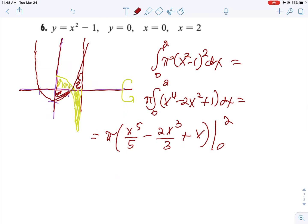And then when you plug in 2 you get 32 over 5 minus 16 over 3 plus 2 which is 46 pi over 15. So there is problem number 6 for you.